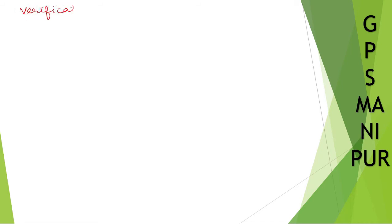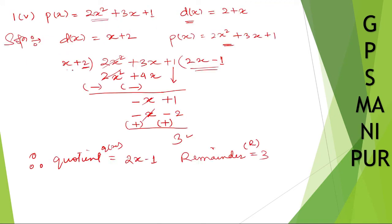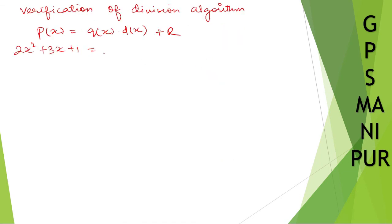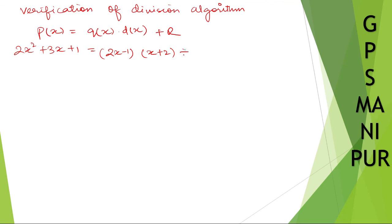Verification of the division algorithm. We need to verify: p(x) = q(x) × d(x) + r. p(x) is 2x squared plus 3x plus 1. q(x) is 2x minus 1. d(x) is x plus 2. The remainder is 3. So the left-hand side is 2x squared plus 3x plus 1.